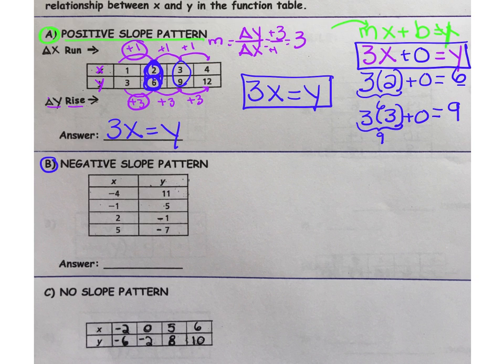In this case, we're going to discover that we have a negative slope. Next to the table, write delta Y and over here, delta X. Off to the side, write MX plus B equals Y. Here we go.